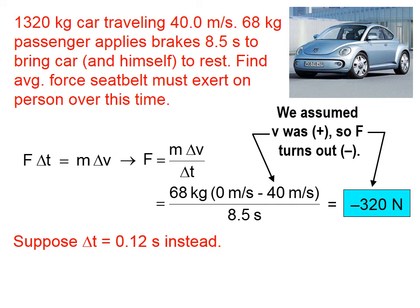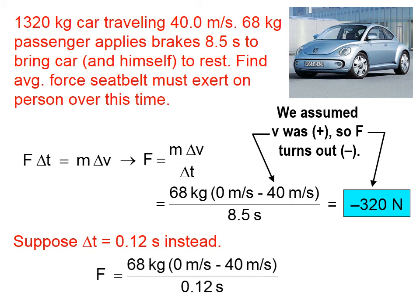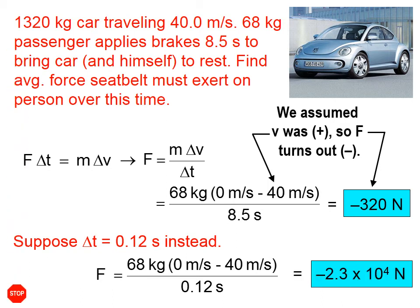Instead of applying the brakes, let's assume that this car smashed into a bridge pier and came to rest in only 0.12 seconds. Everything would be exactly the same as the previous case, except for the time. As we discussed in an earlier lesson, for a given change in momentum — which is the numerator of this equation — if the time is very small, then the force must be very large. For a much larger time, the force can be comparatively smaller.